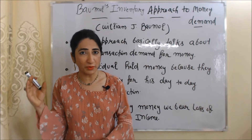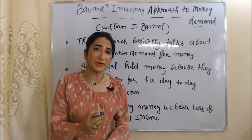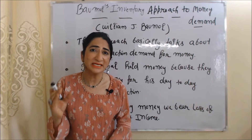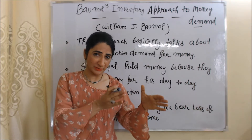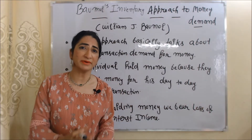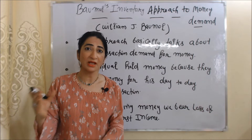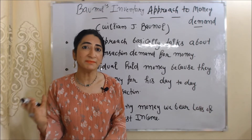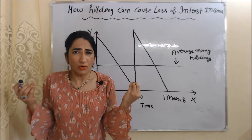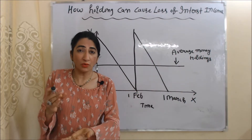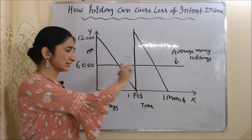This approach basically talks about transaction demand for money. According to this approach, people hold money because they need money for their day-to-day transactions. But by holding money, we bear a loss of interest income. We will clearly understand how holding more money causes a loss of interest income with the help of a diagram.